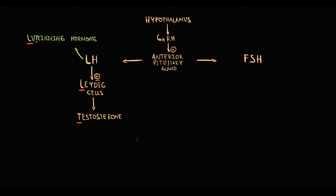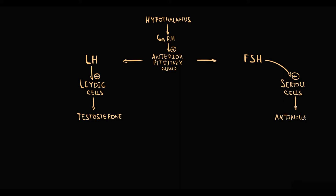Follicle-stimulating hormone acts on Sertoli cells in the seminiferous tubules, which in response secrete anti-Müllerian hormone. Anti-Müllerian hormone promotes spermatogenesis. Once testosterone is produced, most testosterone molecules immediately bind to sex hormone-binding globulin and albumin.